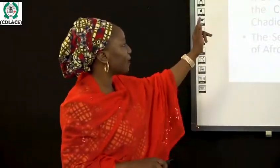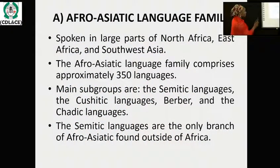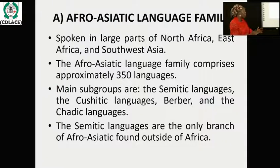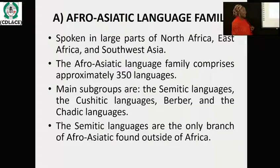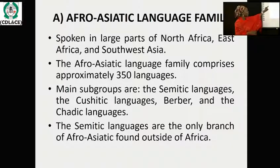The North Africa, the East Africa, and the South West Asia. This language is not only found within Africa but has extended to even Asia — South West Asia, those that are having boundaries with Africa. The Afro-Asiatic language family comprises almost 350 languages approximately, and it is subdivided into four: the Semitic language, the Cushitic language, the Berber, and the Chadic. Of these, it is only the Semitic that is found outside of Africa — for example in South West Asia, where they speak Semitic.